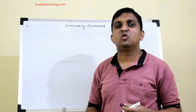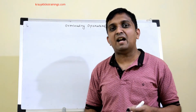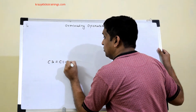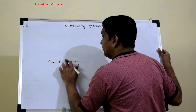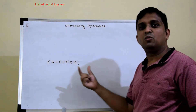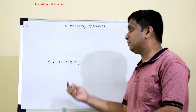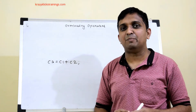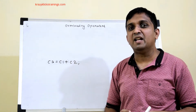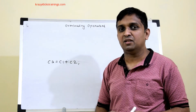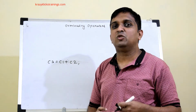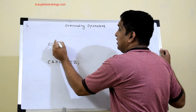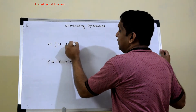We implemented class complex in the last video and I wrote the statement c3 = c1 + c2, where c1, c2, c3 are objects of class complex. When I compiled the code, this statement was throwing an error because the plus operator was not overloaded for class complex. The compiler does not understand the addition of objects of class complex, so to overcome that error we need to overload operator plus.